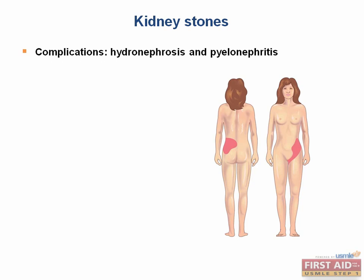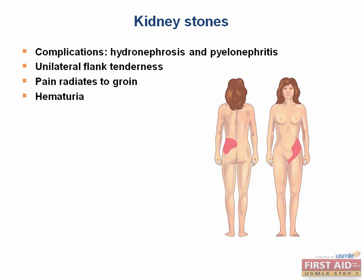Kidney stones present with unilateral flank pain that radiates to the groin, because usually patients only have a kidney stone on one side. There will also be hematuria. However, there will be no red blood cell casts, because the problem is occurring after the renal tubules, so the red blood cells will not be able to form casts.